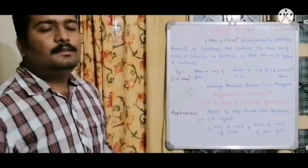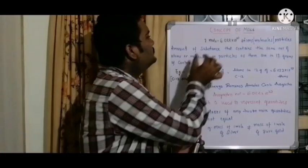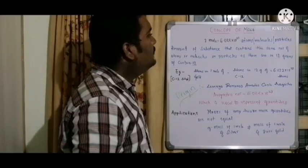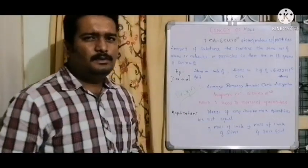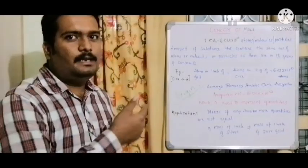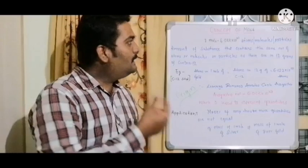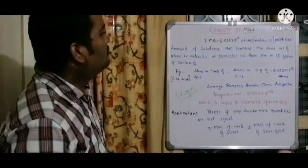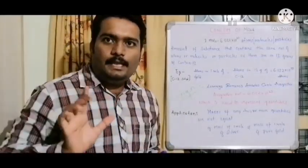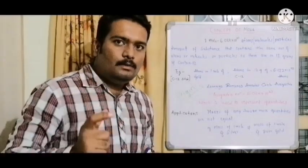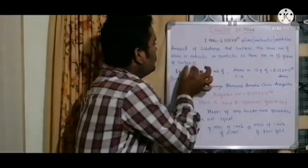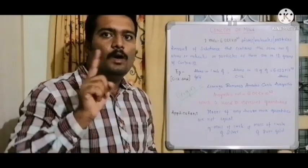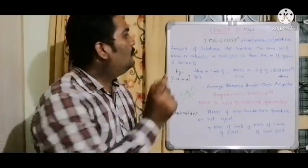Now let us look into the definition of mole. The definition is: the amount of substance that contains the same number of molecules, atoms, or particles as there are in 12 grams of carbon-12. That sounds tedious, but when you split this statement it becomes easy. Simply: any one mole of substance will be equal to 12 grams of carbon-12.